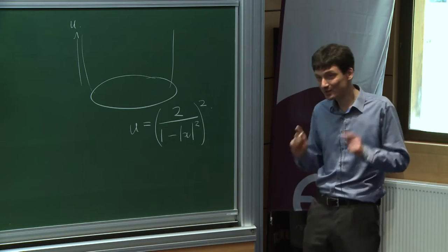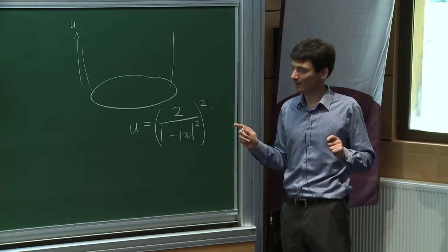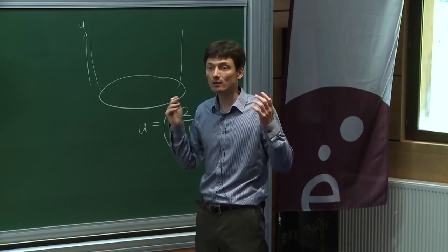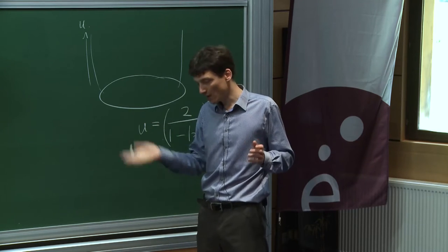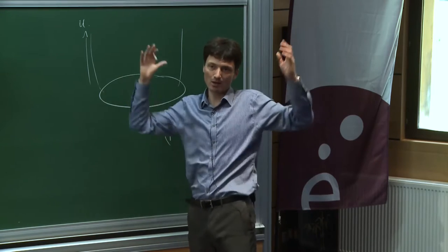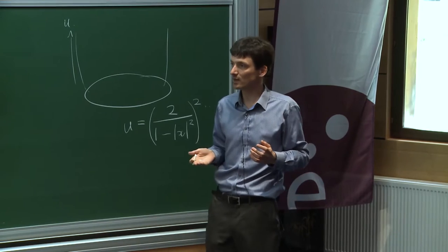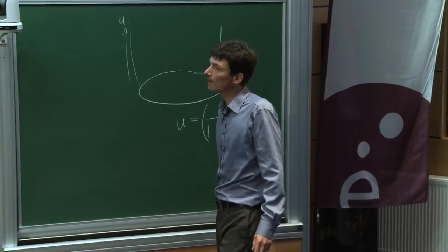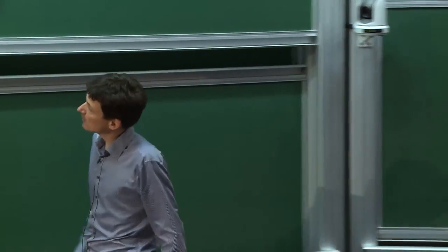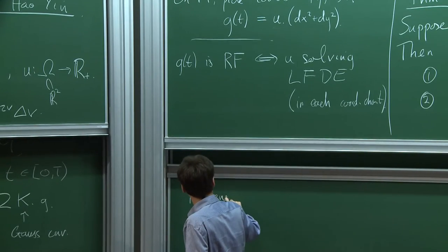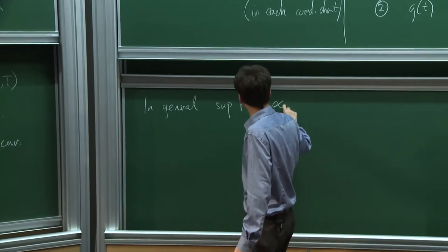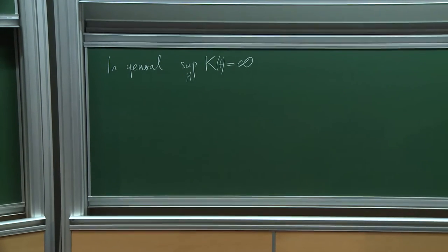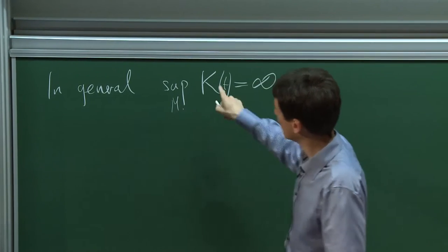The Ricci flow does uniformization for you in this case. You start with any metric on a surface that supports a hyperbolic metric, and it will flow to it: if you divide g(t) by 2t to renormalize (since everything expands in the hyperbolic setting), it converges smoothly locally to the unique uniformization metric, the unique hyperbolic metric. But only smoothly locally, because in general the supremum of curvature can be infinite.